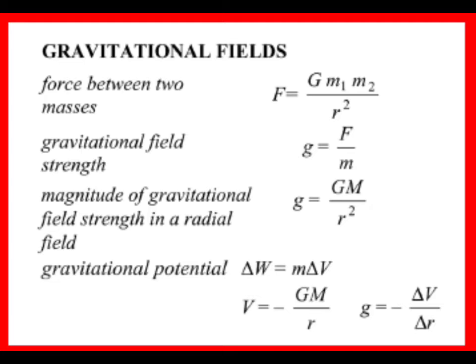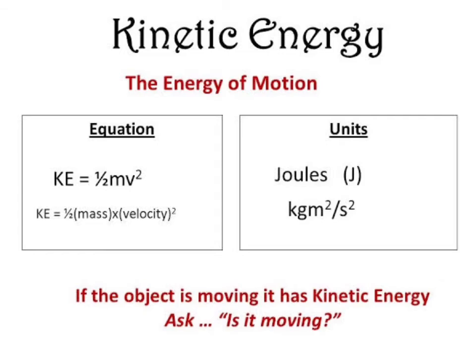Gravitational potential energy depends on how high you are and how massive you are. It is directly proportional to your mass and directly proportional to your height. If you lift a bowling ball up a meter, you have far more gravitational potential energy than if you lift your keys the same distance. And if you move that bowling ball up into the attic, it has even more gravitational potential energy — and therefore more ability to do work if you let it fall.